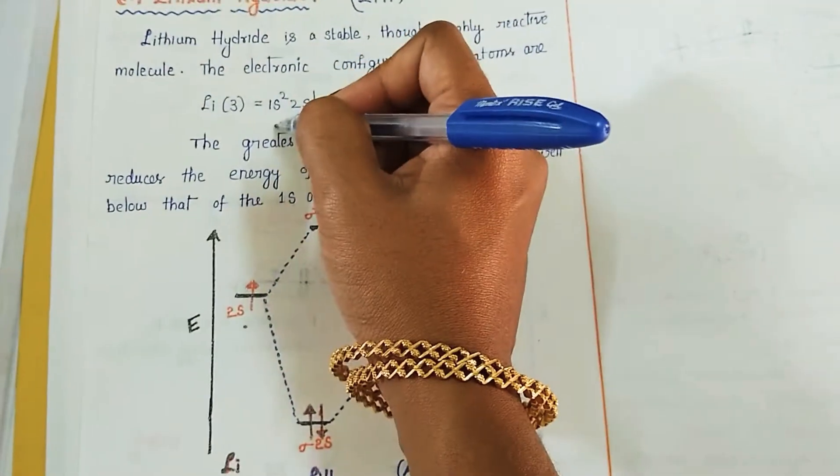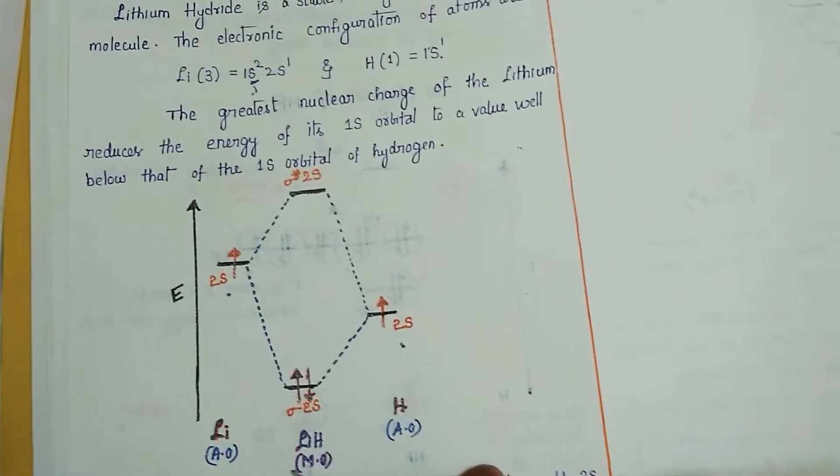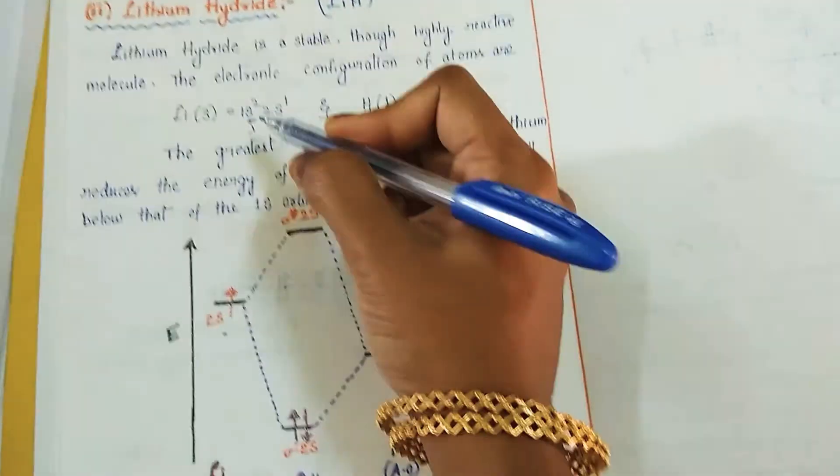In the lithium, 1s² will remain as it is, non-bonding, in the down. Not going to represent here if we consider valency electrons.